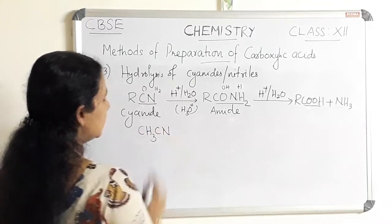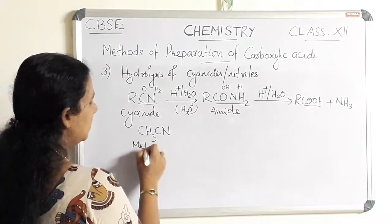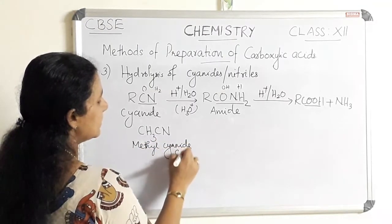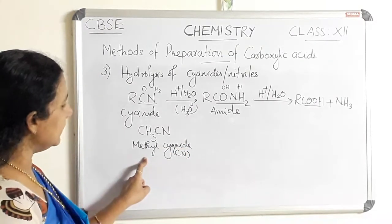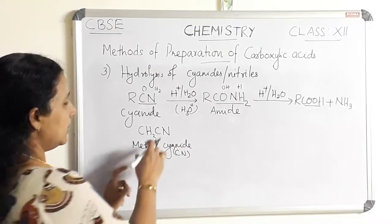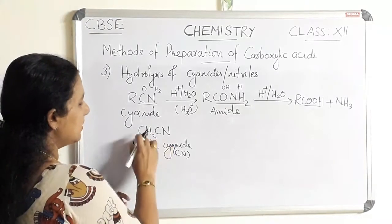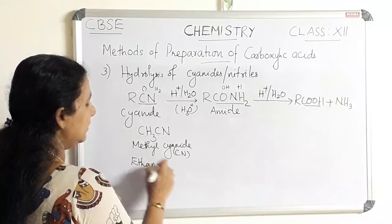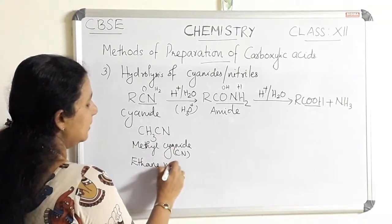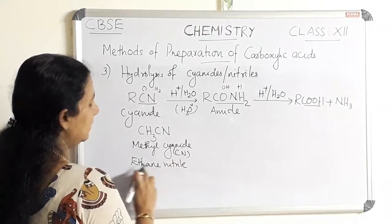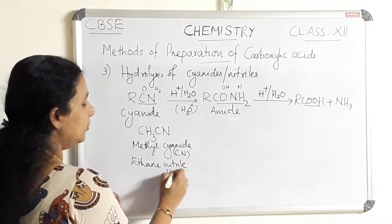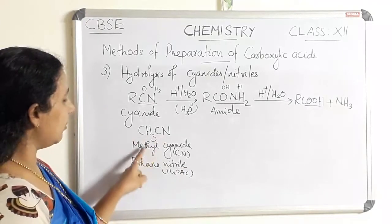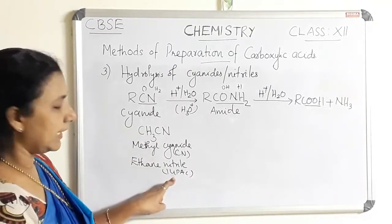We can write one example: CH₃CN, which is methyl cyanide — that is the common name. For the IUPAC name, we add nitrile. We count the carbon atoms: there are two carbon atoms, so the parent alkane is ethane, and we add nitrile. Therefore, ethanenitrile is the IUPAC name of CH₃CN or methyl cyanide.